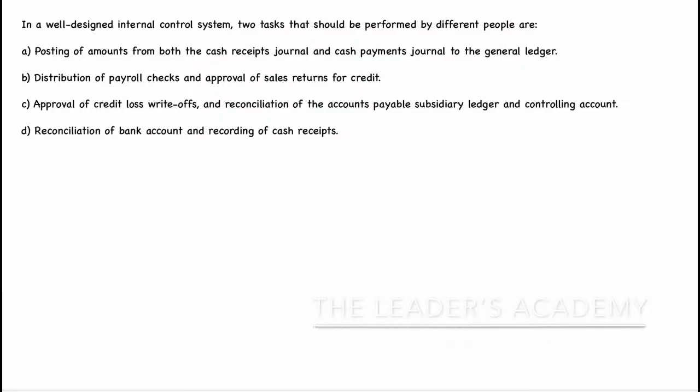In a well-designed internal control system, two tasks that should be performed by different people are: Option A, posting of amounts from both the cash receipts journal and cash payments journal to the general ledger. Option B, distribution of payroll checks and approval of sales returns for credit. Option C, approval of credit loss write-offs and reconciliation of the accounts payable subsidiary ledger and controlling account. Option D, reconciliation of bank account and recording of cash receipts.